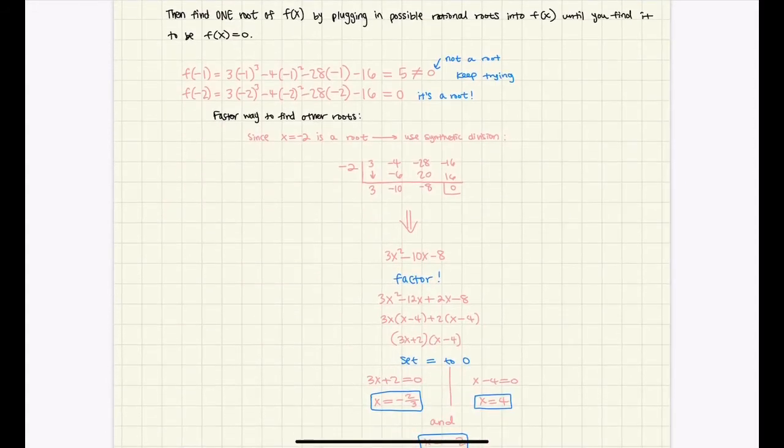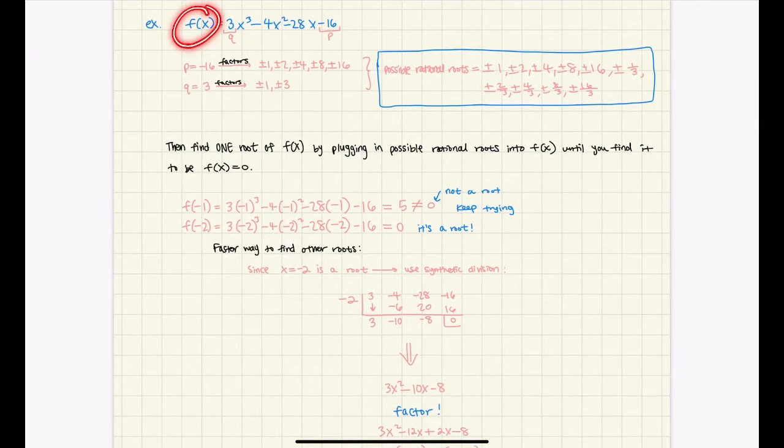Alright, so now the next question is, then find one root of f of x by plugging in rational roots into f of x until you find it to be the root. So the root is going to be when f of x equals 0.